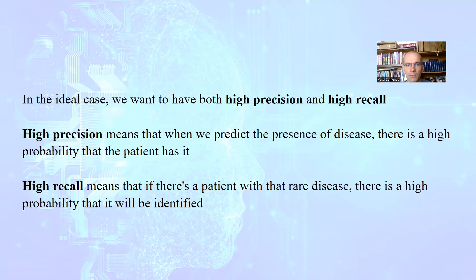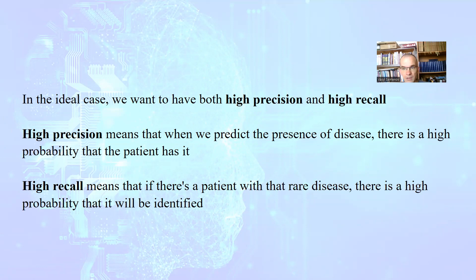In the ideal case, we want both high precision and high recall — this is a very rare situation. High precision means that when we predict the presence of disease, there is a high probability that the patient really has it. High recall means that if there is a patient with a rare disease, there is a high probability that it will be identified and detected.